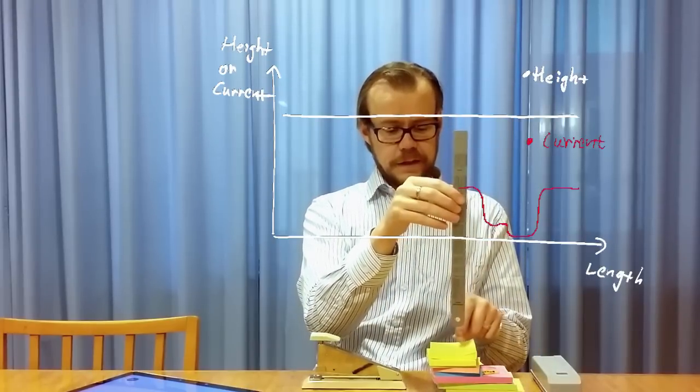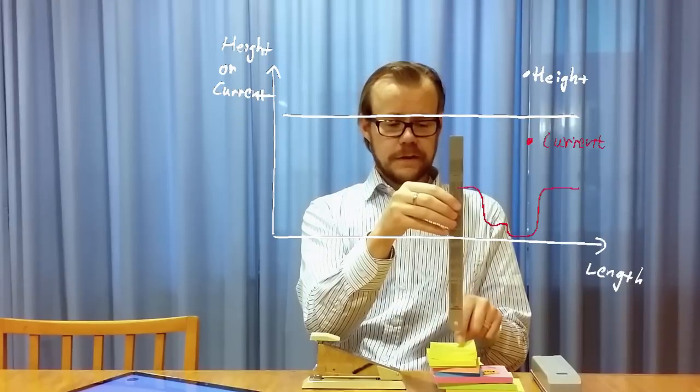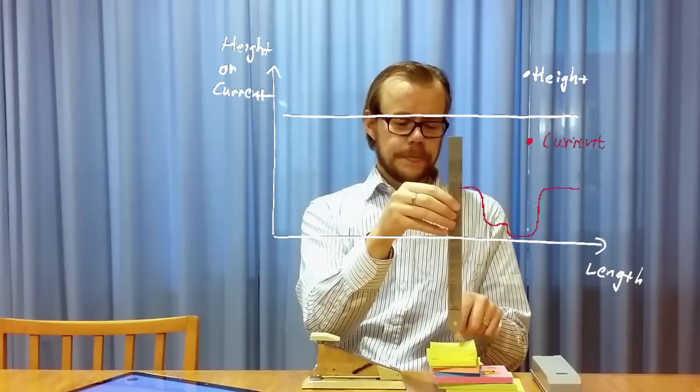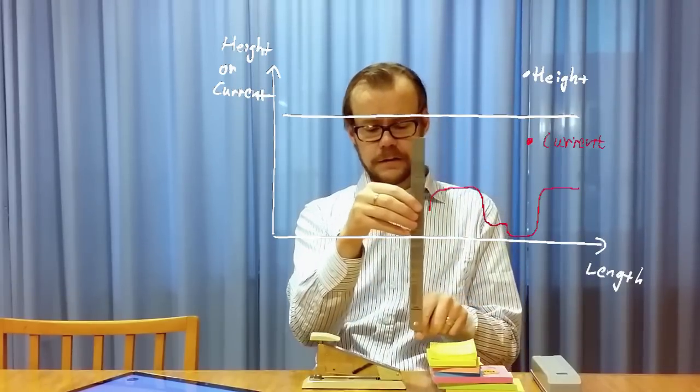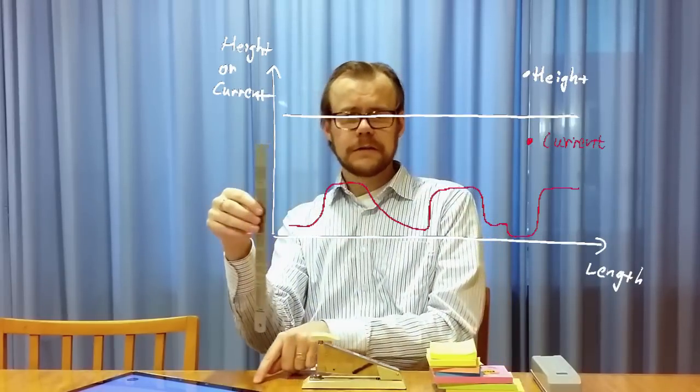We know that I said that the tunneling current increases when the distances between the tip and sample is decreased and the current will increase. So here we have high current, low current, medium current, high current and low current.